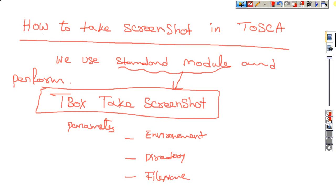How to go for the screenshot — I want to explain very clearly. If you work with Tosca to take a screenshot, we use a standard module. We use the standard module called TBox Take Screenshot. This module has three parameters: Environment, Directory, and File Name. Environment means which type of environment — which application you want to screenshot. Directory means which folder you want to save it. File Name is what name you want to save the file as. These are the three parameters you need to provide.